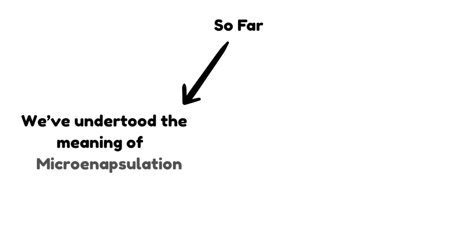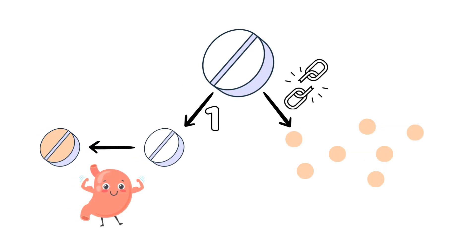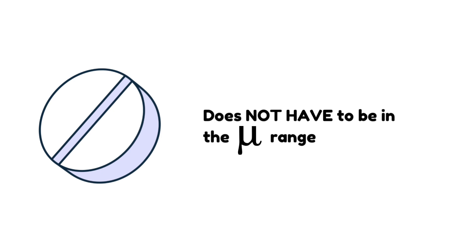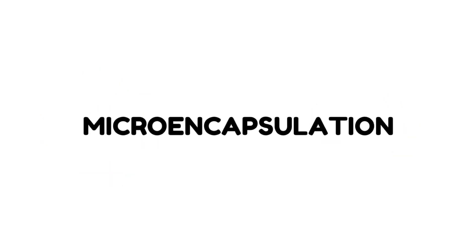You now have two key takeaways. First, you've understood the core meaning of microencapsulation and how coating and microencapsulation differ. The first method — coating the exterior of the tablet — is precisely what coating means. The tougher route of breaking the formulation into micron-sized particles and encapsulating each one is microencapsulation. Second, the formulation you want to perform microencapsulation on doesn't necessarily have to already be in the micron size range — instead, we convert it to micron size and then encapsulate it, which is why the name microencapsulation applies.